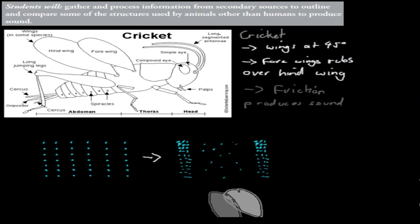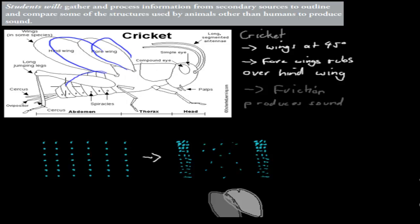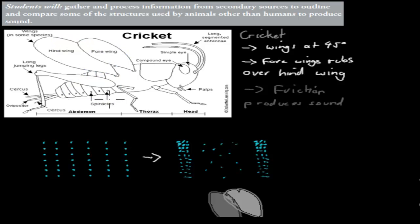First we'll talk about the cricket. The cricket is similar to a grasshopper — it has a head, wings, a thorax, and an abdominal cavity. But for sound, when it comes to crickets, they actually use their wings to produce sound. That's a big difference — we don't use wings to produce sound, but crickets do.